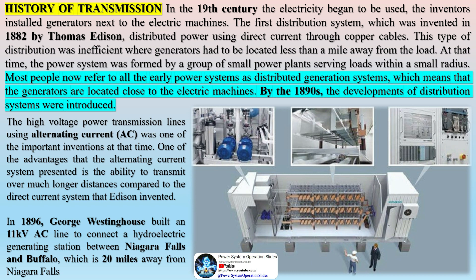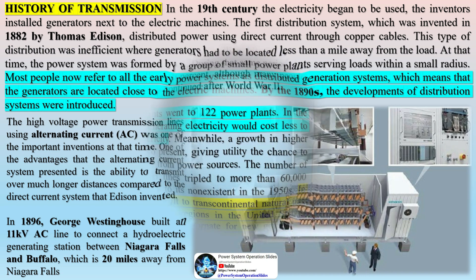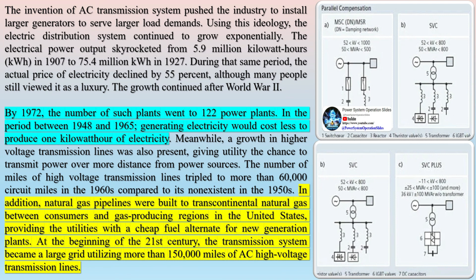At that time, the power system was formed by a group of small power plants serving loads within a small radius. Most people now refer to all the early power systems as distributed generation systems, which means that the generators are located close to the electric machines. By the 1890s, new developments of distribution systems were introduced.